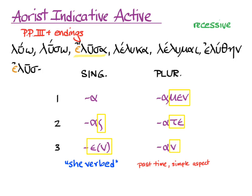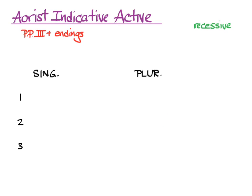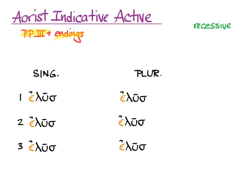Let's put it together. So keeping the augment, we need the third principal part, the endings, and recessive accent, and this chart to put it in. Third principal part, and here with its augment still on it is the third principal part of luo in all of the persons and numbers. Now we need the endings. And here's what happens.